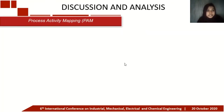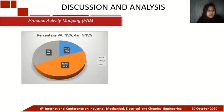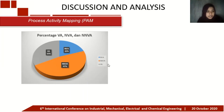Process Activity Mapping (PAM) is used to map processes in more detail by categorizing each process. From the figure, the comparison between value-added, non-value-added, and necessary but non-value-added activities can be seen: value-added activities account for 33%, non-value-added activities 20%, and necessary but non-value-added activities 47%.